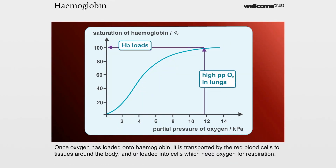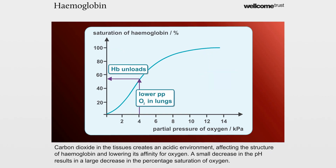Once oxygen has loaded onto haemoglobin, it is transported by the red blood cells to tissues around the body, and unloaded into cells which need oxygen for respiration. Carbon dioxide in the tissues creates an acidic environment, affecting the structure of haemoglobin and lowering its affinity for oxygen. A small decrease in the pH results in a large decrease in the percentage saturation of oxygen.